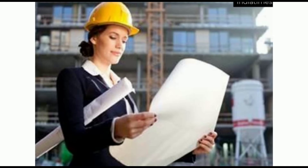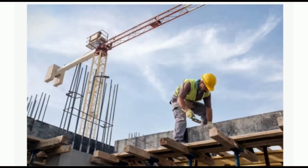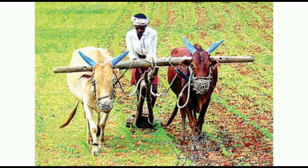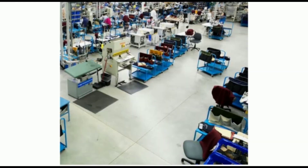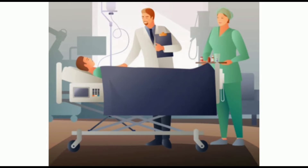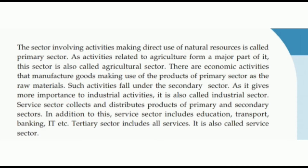We can see so many occupations around us — like farming, fishing, teaching, and doctors. We can classify all occupations and all jobs in our society into three sectors: primary sector, secondary sector, and tertiary sector. These are the three sectors used to classify all occupations around us.